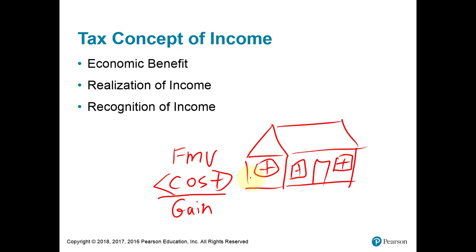If you take the difference between that value and cost, this is a gain — hopefully not a loss. As you own the home over the years, hopefully the value keeps increasing. The cost wouldn't change unless you make some type of improvement to the property. This is an economic benefit, but you don't pay any tax on it as the value increases while you own the property. We call this an unrealized gain.